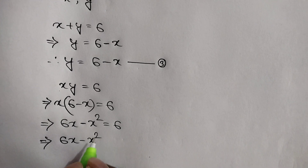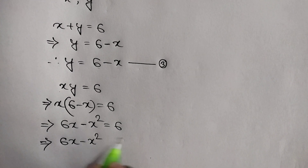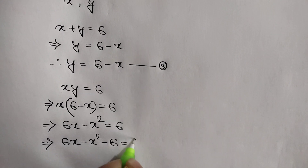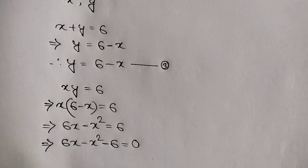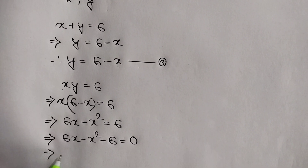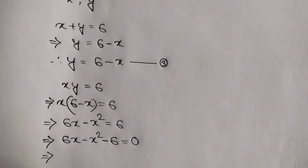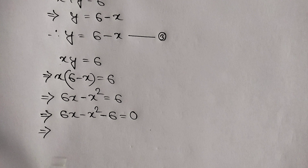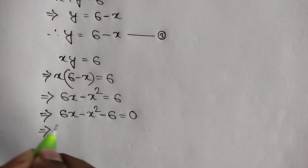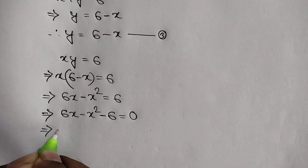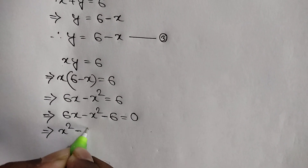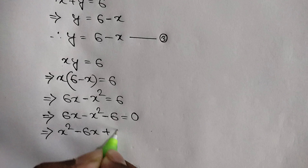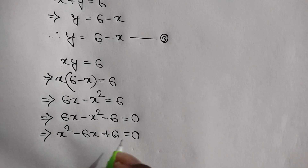After moving 6 to the left side we get 6x minus x squared minus 6 is equal to 0. Dividing both sides by negative 1, we get x squared minus 6x plus 6 is equal to 0.